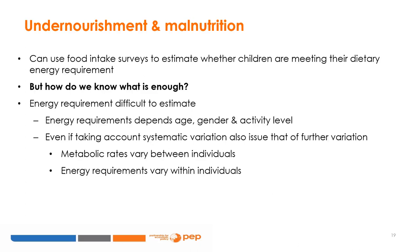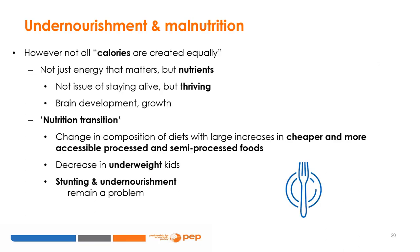We can use food intake surveys to estimate whether children are meeting their dietary energy requirement, but the question is: how do we know what is enough energy? It is difficult to estimate an individual's energy requirements because they depend on age, gender, and the individual's activity level. Even if taking into account systematic variation, there is also further variation based on metabolic rates, and energy requirements also vary over time within individuals.